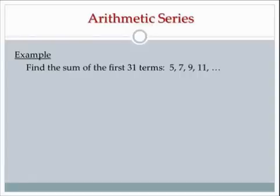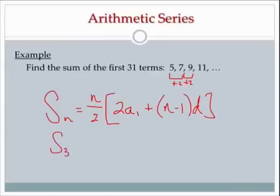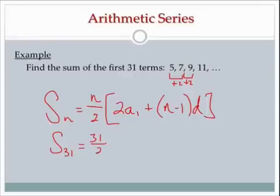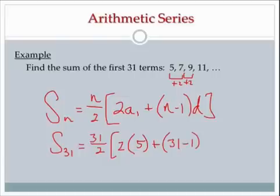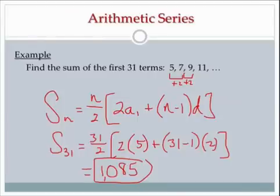Now I'm just asking for the sum of the first 31 terms of the arithmetic sequence 5, 7, 9, 11, 13 — I'm adding 2 each time. I'll use that long formula because I don't need to know the last term. So S sub 31 equals 31 over 2 times 2 times a sub 1 which is 5, plus 31 minus 1 times d which is 2. Running the calculation gives 1,085. So adding those numbers for 31 terms gives 1,085.